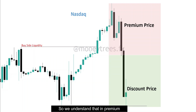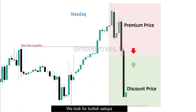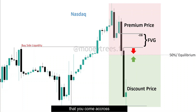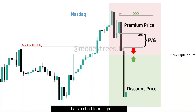In premium, we look for bearish setups. In discount, we look for bullish setups to target the premium PDRs or the 50% level, which is also known as the equilibrium. You can also target the first short term high that you come across in the opposite side of the range — we have one right here.